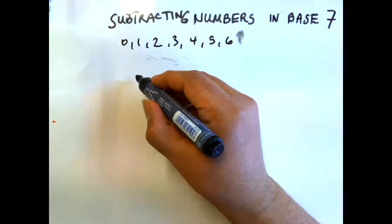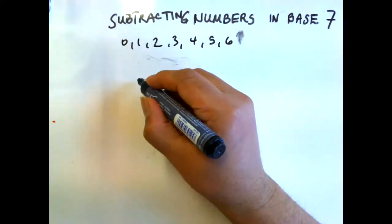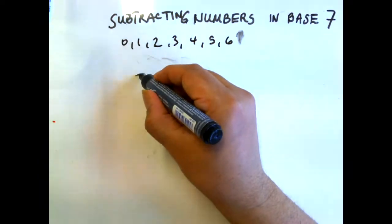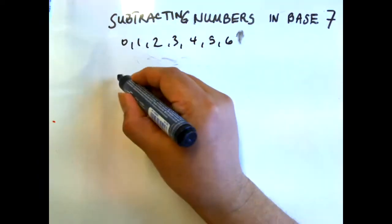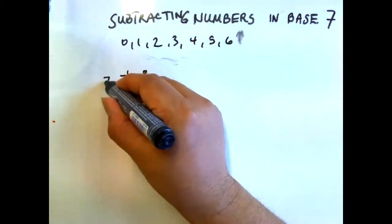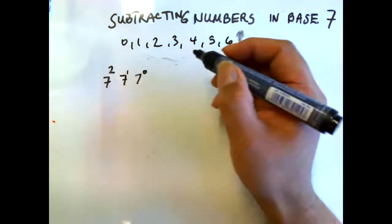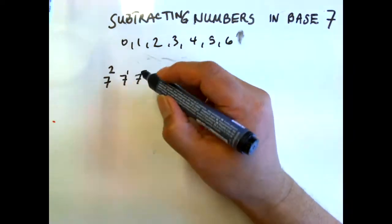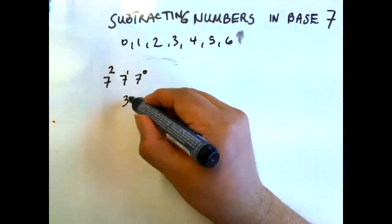Let's look at the place values in base 7. The place values are 7 raised to the power of 0, 7 raised to the power of 1, 7 raised to the power of 2, and so on. For example, let's do 32 in base 7 less 14 in base 7.